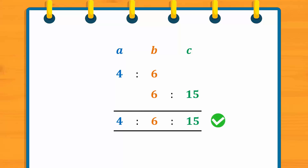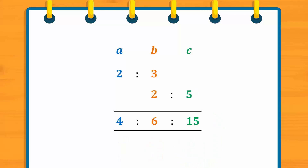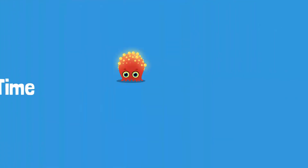One way of looking at this ratio is that there are 4 blue squares to 6 orange squares to 15 green squares. To obtain the continued ratio, we follow these steps: we get the first number of the continued ratio by multiplying the first number of the top ratio with the first number of the bottom ratio; we get the second number by multiplying the second number of the top ratio with the first number of the bottom ratio; and we get the third number by multiplying the second number of the top ratio with the second number of the bottom ratio.